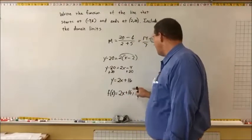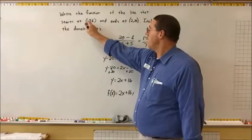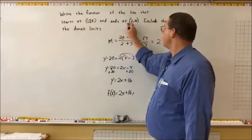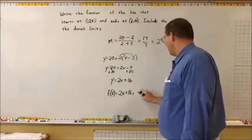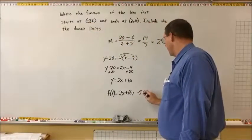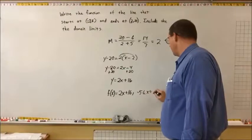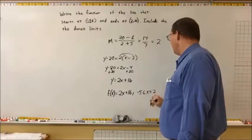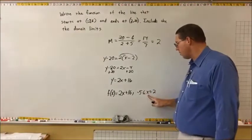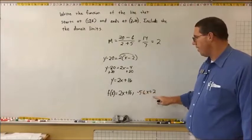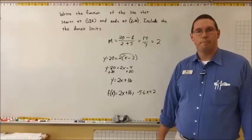This line starts at negative 5 and ends at 2, so the domain limit is negative 5 less than or equal to x less than or equal to 2. We read it as x is on the interval between negative 5 and 2.